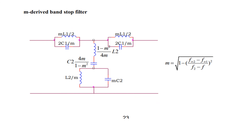Next is the M-derived band stop filter. In the series arm, ML1/2 and 2C1/M are in parallel, repeated symmetrically. In the shunt arm, inductance and capacitance are in parallel: the inductor value is (1 - M²) / (4M) × L2 in series with capacitance C2 × 4M / (1 - M²), both in parallel with L2/M inductor and MC2 capacitor. The value of M is given by: M = square root of [1 - (F∞2 - F∞1) / (F2 - F1)]².